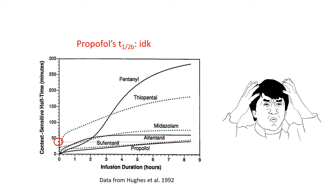I would also point out that these values are not solely properties of the drugs — they vary between patients. For propofol, for example, the context-sensitive halftime has been shown to be longer in children for a given duration of infusion. I expect this is due to accelerated drug distribution.